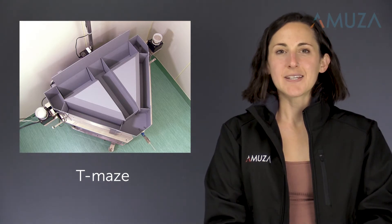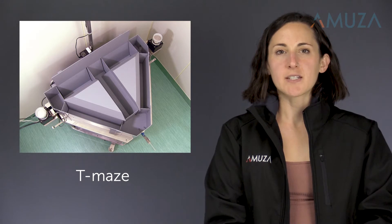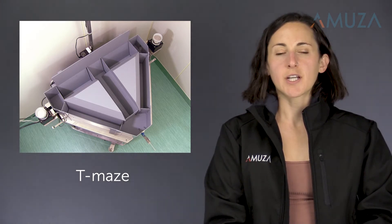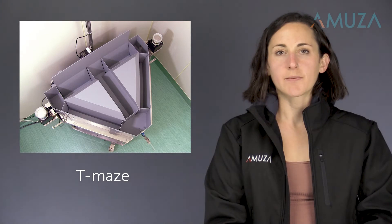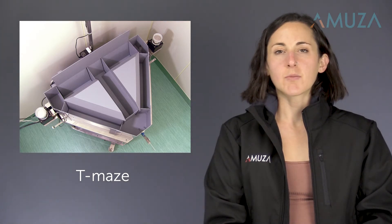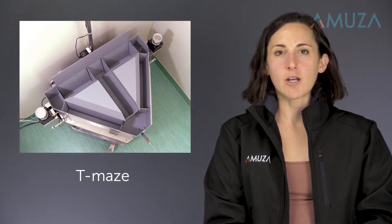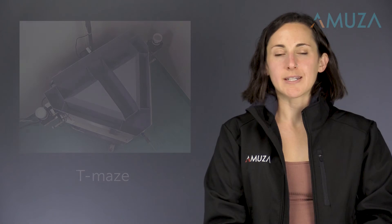The T-Maze can be used to measure spatial working memory by placing a reward at the end of one arm of the maze and then alternating the reward. The animal must learn that the arm that was previously not rewarded now is. Next is the Y-Maze.